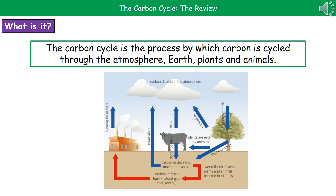Welcome to our review on the carbon cycle. As we mentioned in our previous video, one of the key minerals that will be cycled through our ecosystem is carbon. The carbon cycle itself is the process by which carbon is cycled through the atmosphere, the earth, plants and animals.